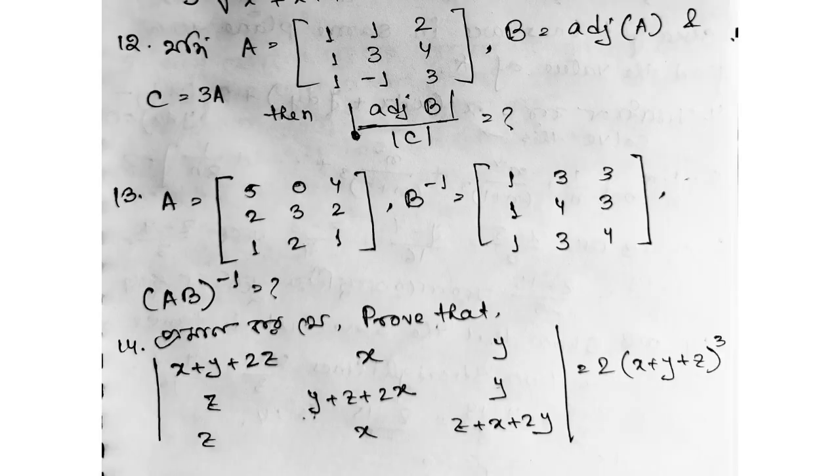Large number question: Matrix A equals 1, 1, 2, 1, 3, 4, 1, 1, 3. B equals adjoint A and C equals 3A. Find B divided by mod C. Another question: Matrix A equals 5, 0, 4, 2, 3, 2, 1, 2, 1, B inverse equals 1, 3, 3, 1, 4, 3, 1, 3, 4. Find A B inverse.